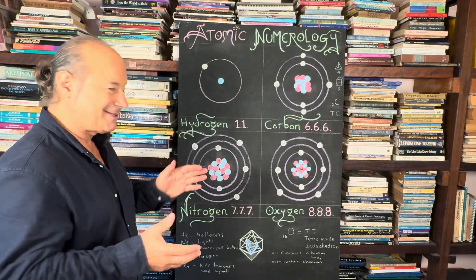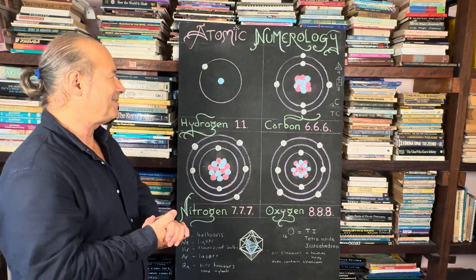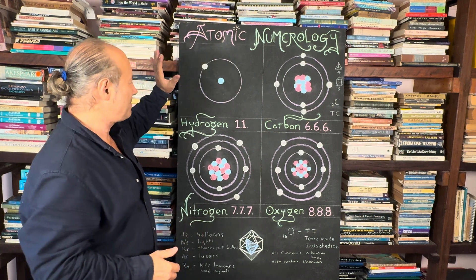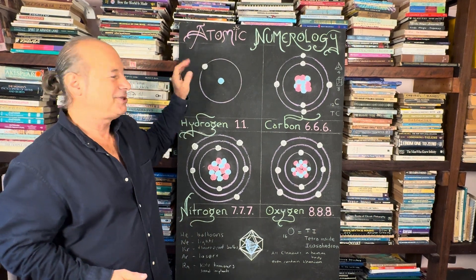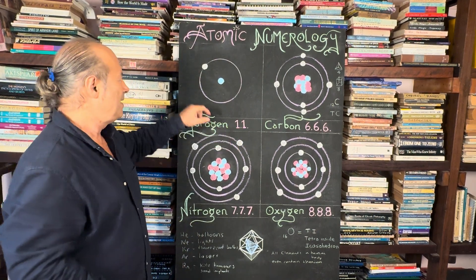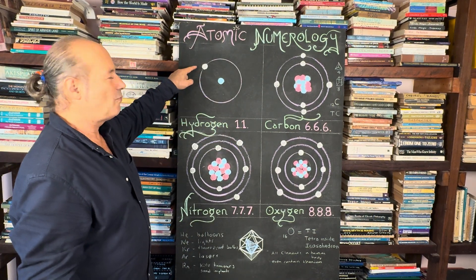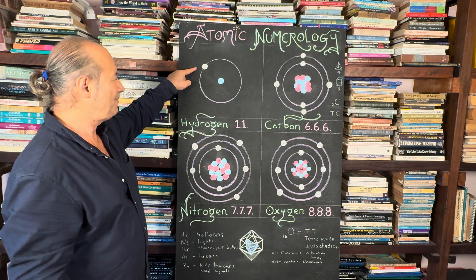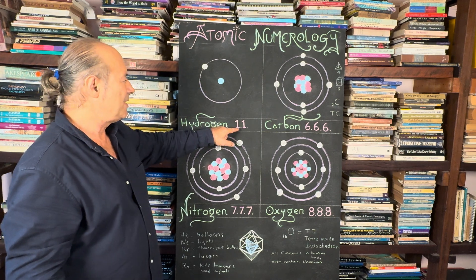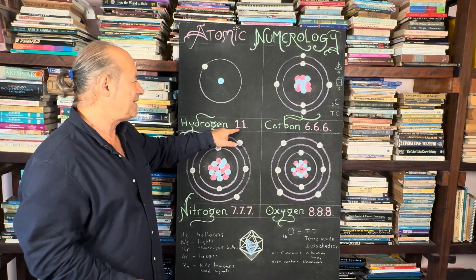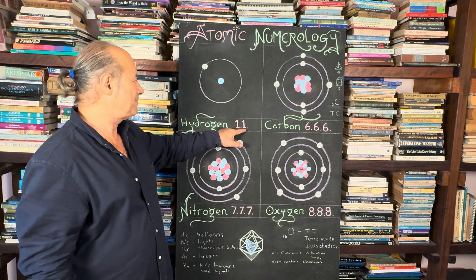A bit of physics doesn't hurt anybody. We're going to start off with the most abundant element in the universe — it's called hydrogen. Hydrogen has one proton and one electron, so its configuration or signature is 1, 1.